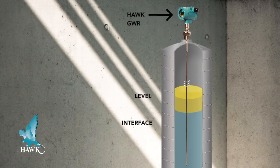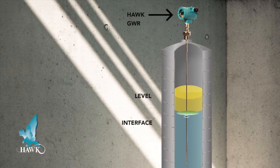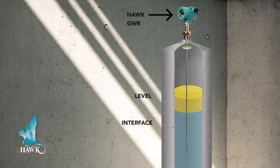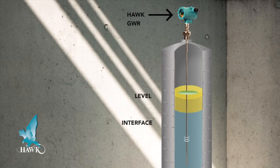The guided wave radar technology uses a probe to measure and guide high-frequency electromagnetic waves as they travel down the transmitter to the media being measured. When the radar pulse hits the low and high dielectric layers, it is then reflected back up the probe to the sensor.